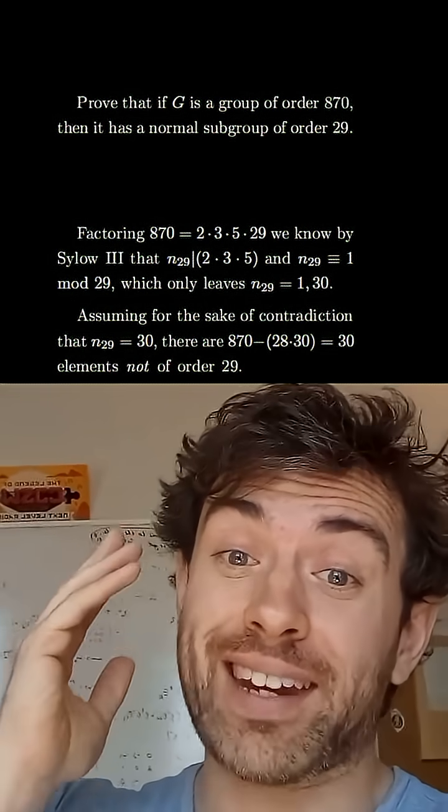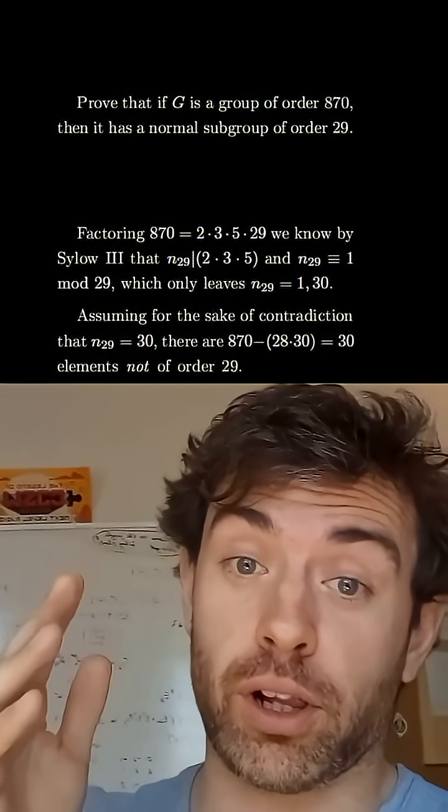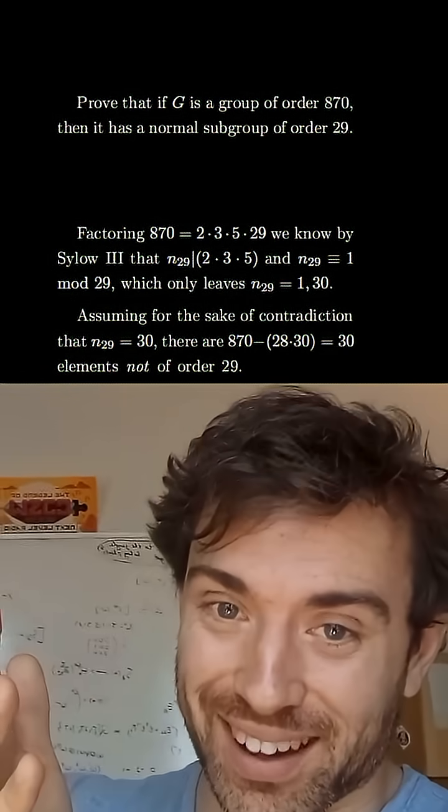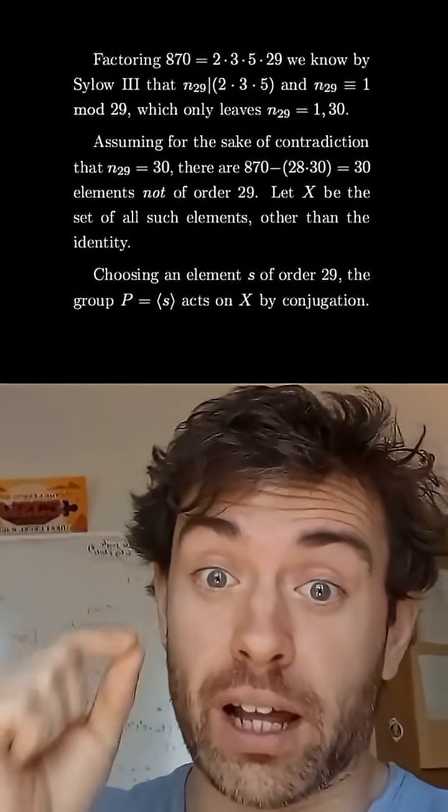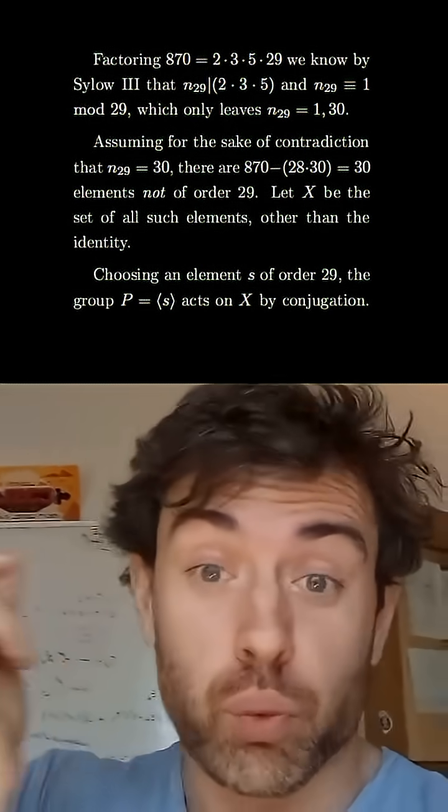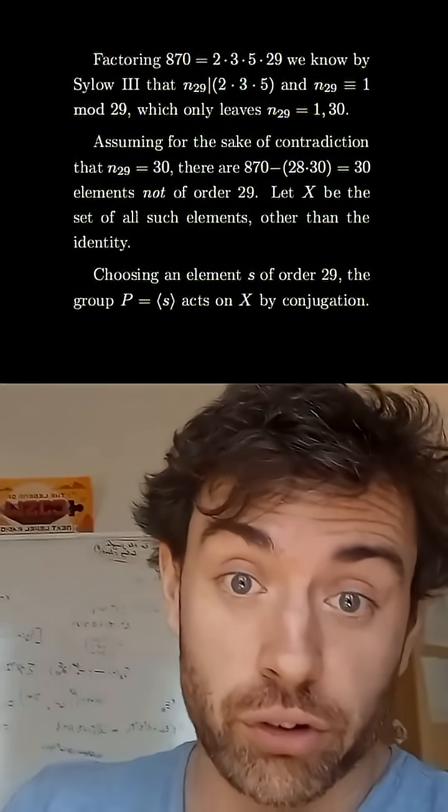So we're going to let the set X be all of those elements that don't have order 29 or order 1. So that's going to have 29 elements, and we choose an element s of order 29 which exists because we know that we have at least one of these Sylow subgroups by Cauchy's theorem.